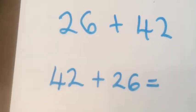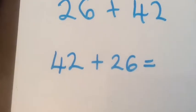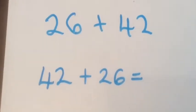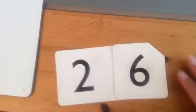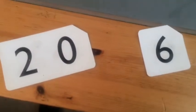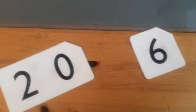So instead we're going to do forty-two add twenty-six. But we're not going to add twenty-six in one go. Let's partition like we did yesterday. Twenty-six is made up of twenty and six. So we'll add the tens first, the twenty, then we can add the six.